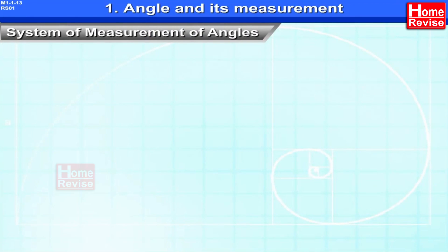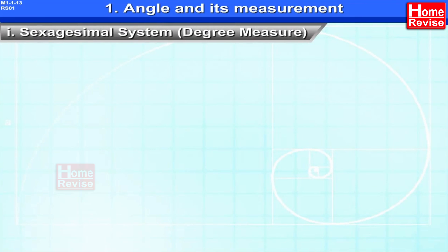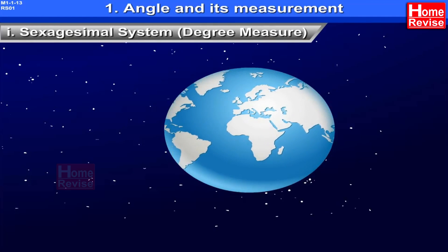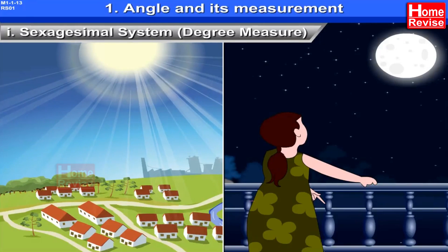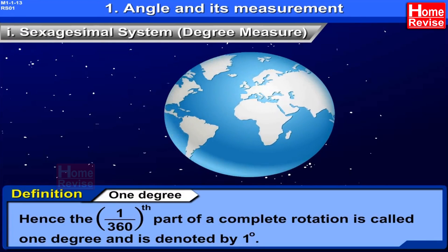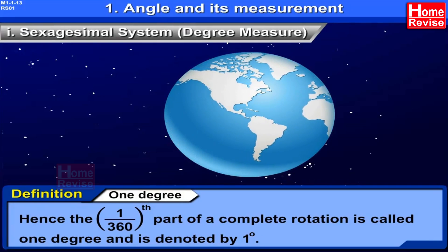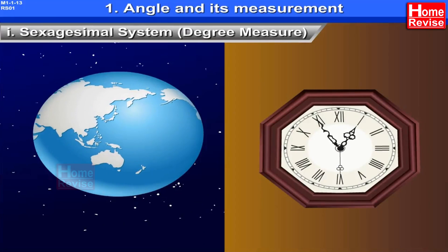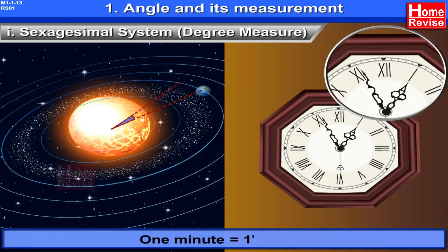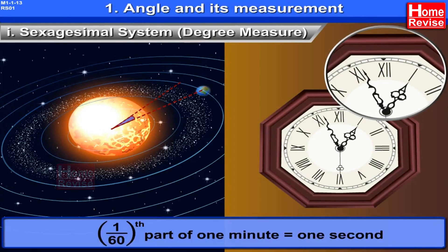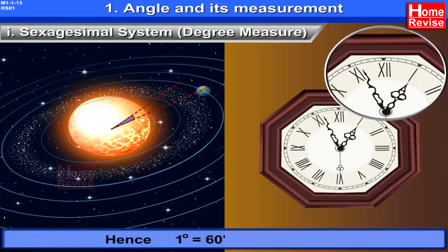Systems of measurement of angles: one — the sexagesimal system or degree measure. The Earth revolves around the sun and completes exactly 360 degrees in one rotation. The minute change in position of the Earth makes a large difference in all geographic conditions. Therefore, the 1/360th part of a complete rotation is called one degree, denoted by the degree symbol. If the Earth covers 1/60th of a degree, that is one minute; and the 1/60th part of one minute is called one second — just like the hands of a clock.